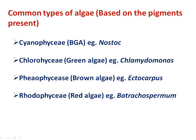The third group is Phaeophyceae: the color of this algae is brown due to the presence of a pigment fucoxanthin. An example of brown algae is Ectocarpus. The next group is Rhodophyceae: the color of this algae is red due to the presence of a pigment phycoerythrin. An example of red algae is Batrachospermum.